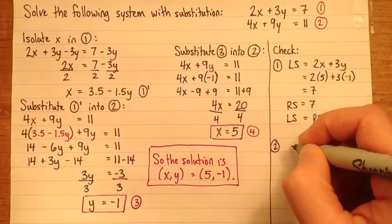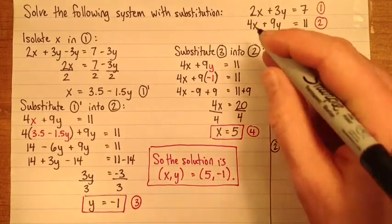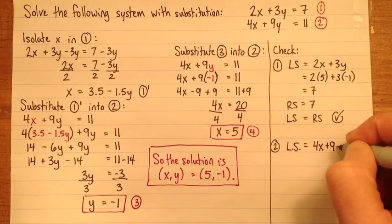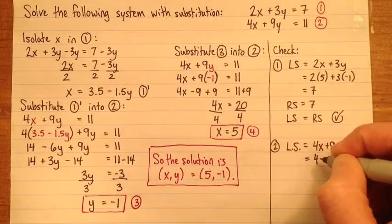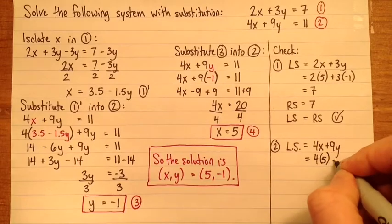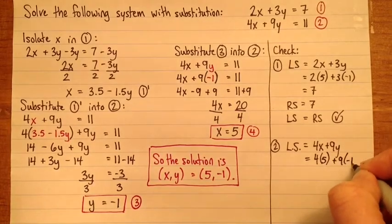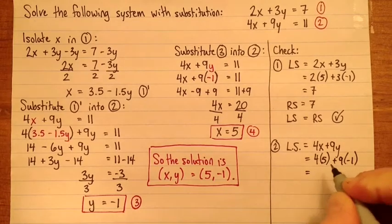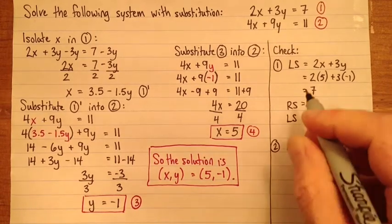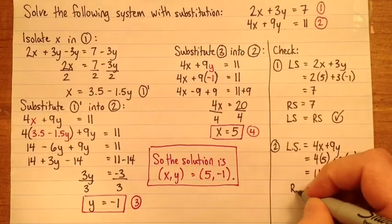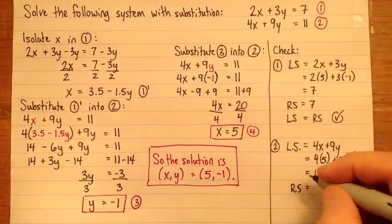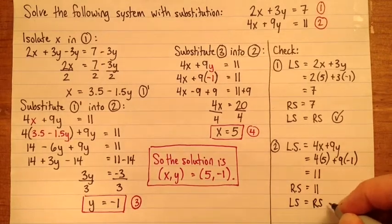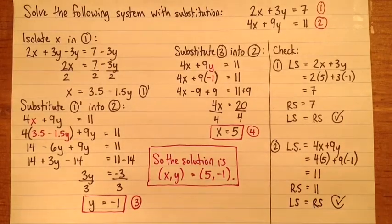Equation 2, the left side is 4x plus 9y, which is 4 times 5 plus 9 times negative 1. So that's 20 minus 9 is 11. The right side is also 11. So that's perfect. Left side equals right side.